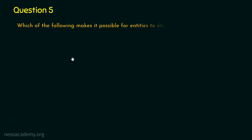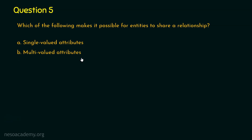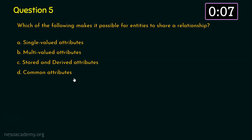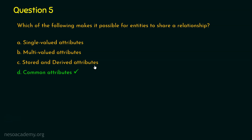Question number five: which of the following makes it possible for entities to share a relationship? Option A: single-valued attributes. Option B: multi-valued attributes. Option C: stored and derived attributes. Option D: common attributes. The right answer is option D, common attributes. If there is no common attribute in two relations, a relationship cannot be formed. We need at least one common attribute in both relations for entities or tables to share a relationship.